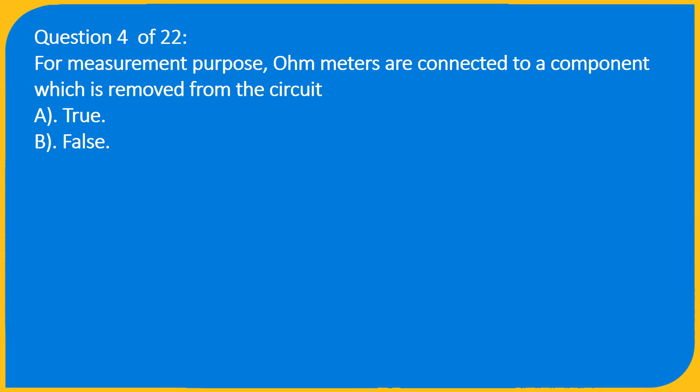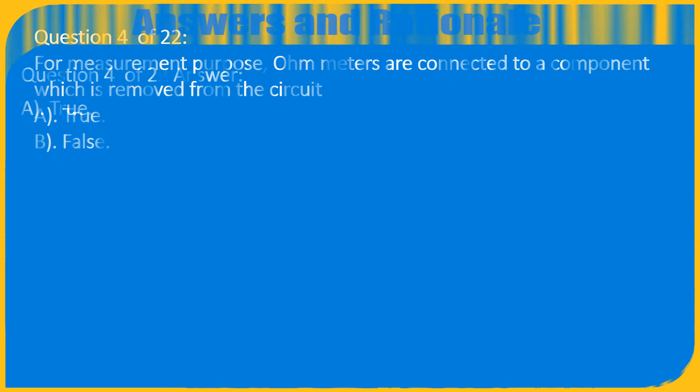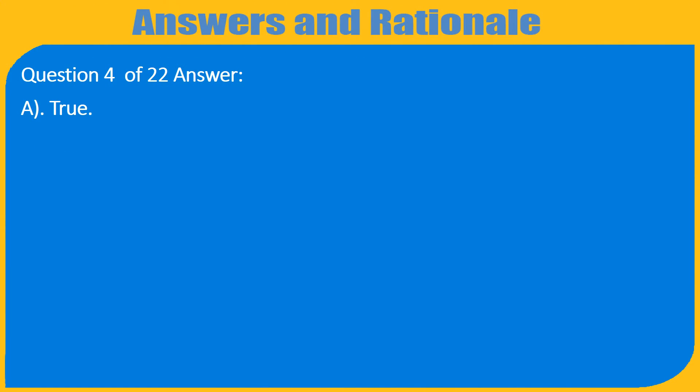Question 4 of 22: For measurement purposes, ohmmeters are connected to a component which is removed from the circuit. A. True, B. False. Answer: A. True.